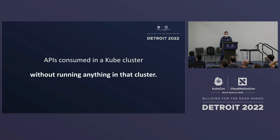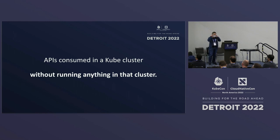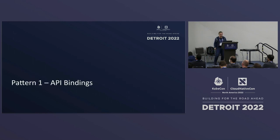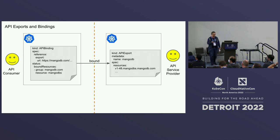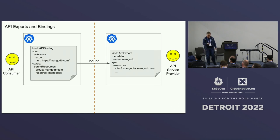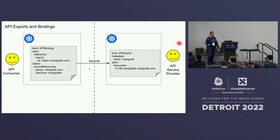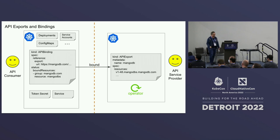To look into the details: the API is consumed in the kubectl cluster without running anything in that cluster. We have API bindings — a binding on my side and an export on the provider side. On the right side you have the provider persona — the service provider, the database provider, MongoDB as a company. They export the API and I can bind to it. I just say the URL is that one, I want those resources — MongoDB in that case — and there's a binding.